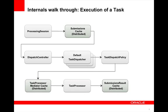For tasks, there is an extra level of indirection. The client, through the processing session, submits a task which gets stored in the submission cache, and a task dispatcher handles all the tasks. The task dispatcher knows about all the task processors available for dispatching, and selects — using a task dispatch policy — which particular task processor will handle a particular task. Task processors can live both on Coherence Extend nodes as well as in the grid. This extra level of indirection allows task processors to execute work on Extend nodes. The task processor finally runs the task, creates the result, and puts it in the submissions result cache.